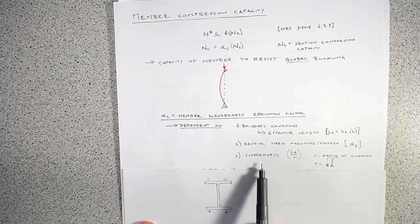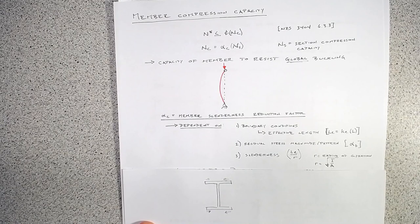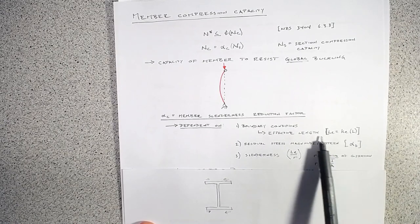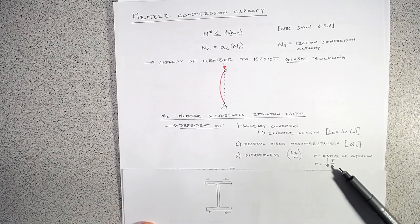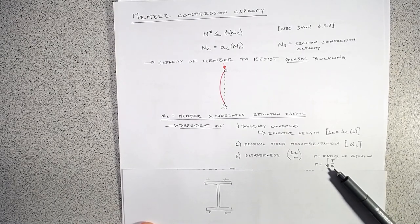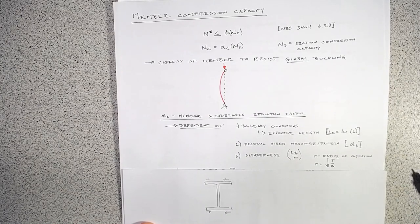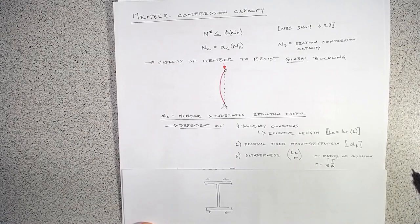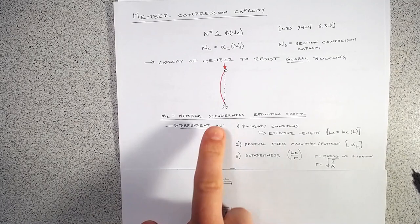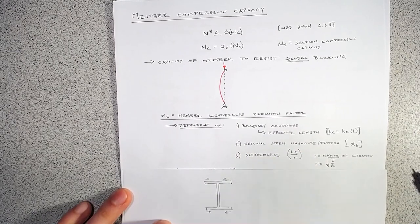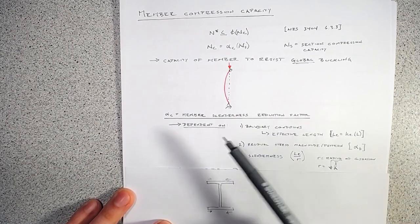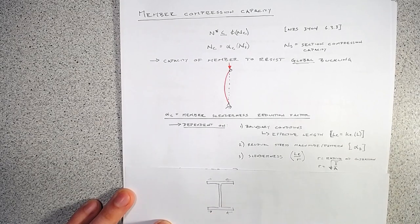The third factor driving alpha_c is the slenderness ratio: L_e divided by r, where r is the radius of gyration. The radius of gyration is a measure of how far out the material of a given section is from its centroid — telling us about its ability to resist movement away from the center, which in this case is buckling.